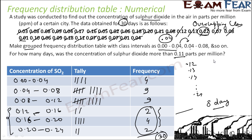We can also see that in the maximum number of days — that is 18 days — the concentration of sulfur dioxide was in the range 0.04 to 0.12. This data is also used by different companies to decide which city to stay in, and the government takes necessary actions to put special policies, such as banning certain types of vehicles. All these things are done based on this data, which comes from statistics — statistics helps make our lives better.